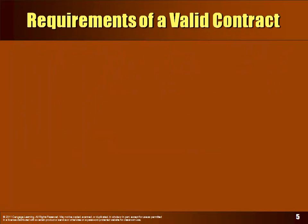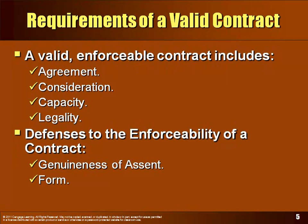A contract has to have four elements — make sure you know all of them, because if one is missing, that's a problem. In order to have a valid, enforceable contract you need the parties to agree. There were two parts to agreement in Chapter 8: offer and acceptance. Somebody makes an offer, the other party accepts those exact terms — that's how you get agreement.